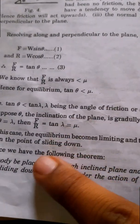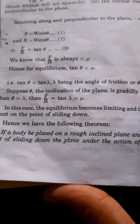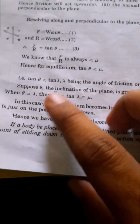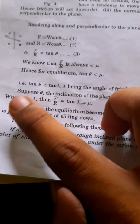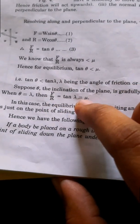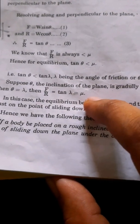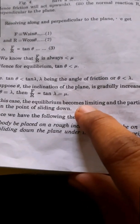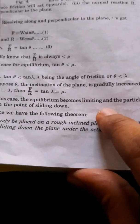Since mu equals tan lambda, we get tan theta less than tan lambda, where lambda is the angle of friction. Suppose theta, the angle of inclination, is gradually increased. If theta equals lambda, then F by R equals tan lambda, and since tan lambda equals mu, the equilibrium becomes limiting and the particle is just on the point of sliding down.